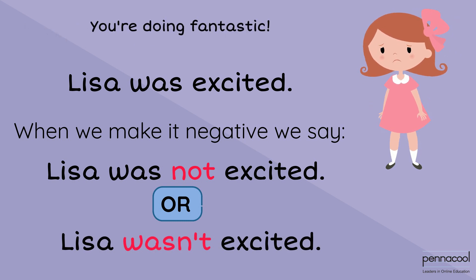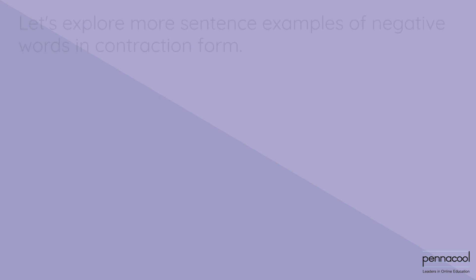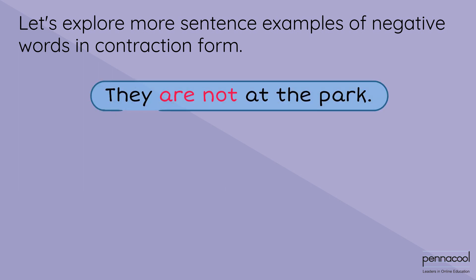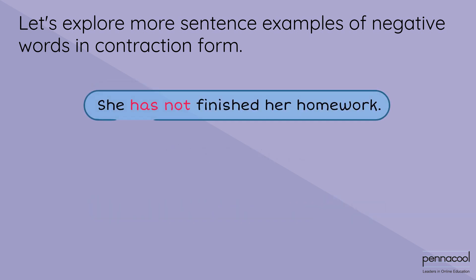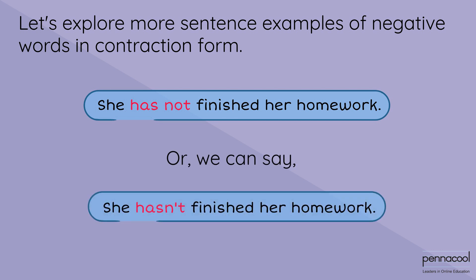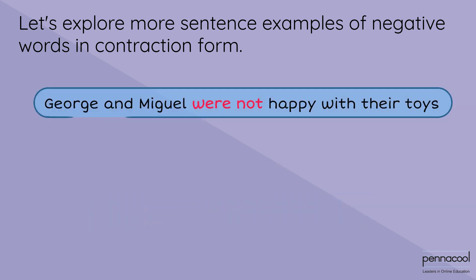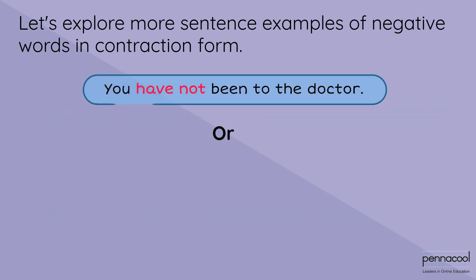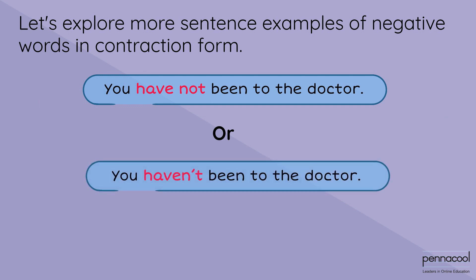You're doing fantastic! Let's explore more sentence examples of negative words in contraction form. They are not at the park, or we can say they aren't at the park. She has not finished her homework, or we can say she hasn't finished her homework. George and Miguel were not happy with their toys, or we can say George and Miguel weren't happy with their toys. You have not been to the doctor, or you haven't been to the doctor.